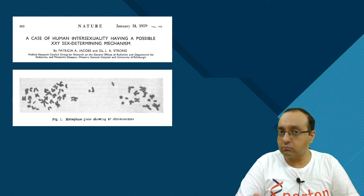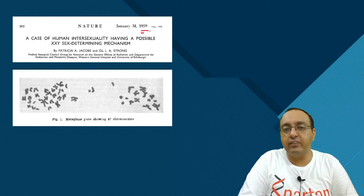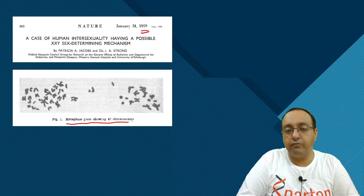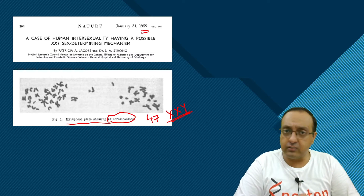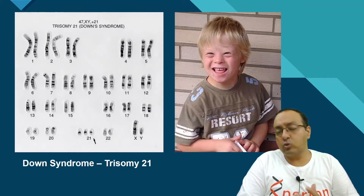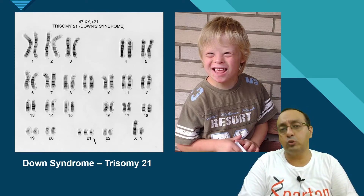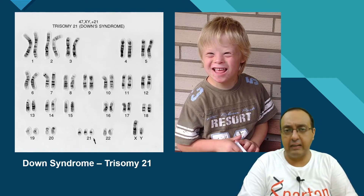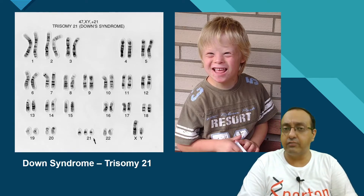Similarly, Klinefelter syndrome was also diagnosed and its mechanism was at least partially elucidated in 1959, where the metaphase plate showed 47 chromosomes. The karyotype of Klinefelter syndrome is 47,XXY. One of the most common developmental abnormalities is Down syndrome, a trisomy caused by the presence of three copies of chromosome 21. Its cause became known only after the development of human cytogenetics methods like the banding patterns described.